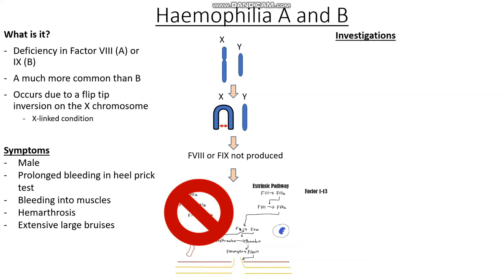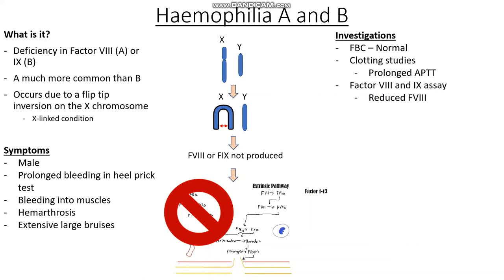In terms of investigations, in any bleeding disorder we must ask whether this is an issue with primary or secondary haemostasis. We can rule out primary haemostasis issues with a full blood count — and because there are no issues with platelets, this will be completely normal. To check secondary haemostasis, we do clotting studies. Because we are turning off the intrinsic pathway, we will see a prolonged APTT. We can then do a Factor VIII and Factor IX assay — and since Factor VIII deficiency is more common, we will usually see reduced amounts of Factor VIII.